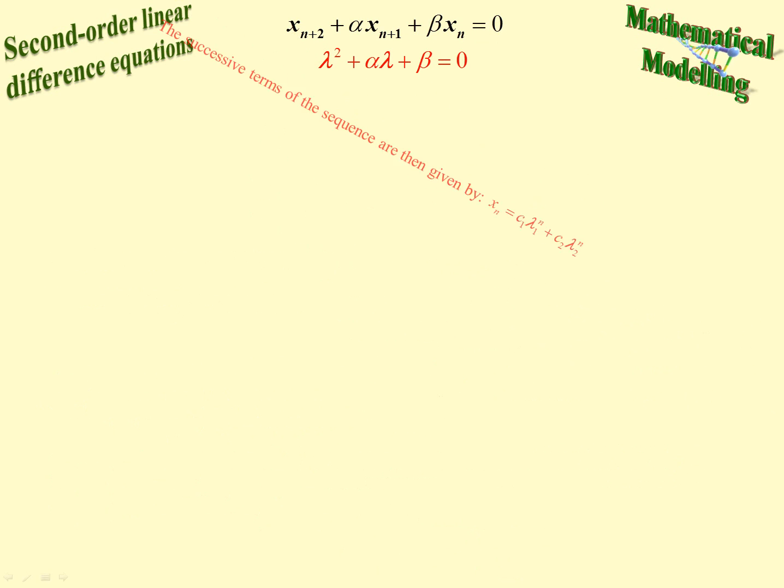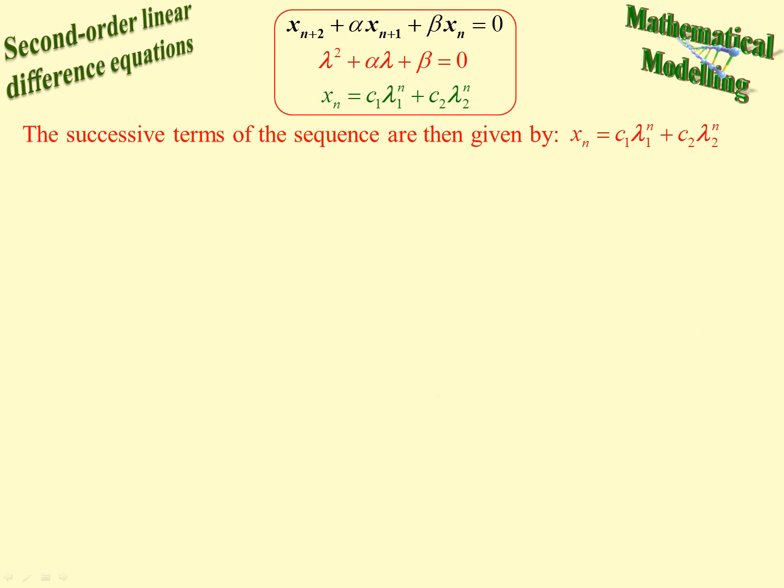Then one further formula. We have a formula for the actual nth term of the sequence: C1 lambda 1 to the n plus C2 lambda 2 to the n. What we do is substitute the first two terms in because we have to be given two terms of the linear difference second order equation if we are going to be able to solve it.